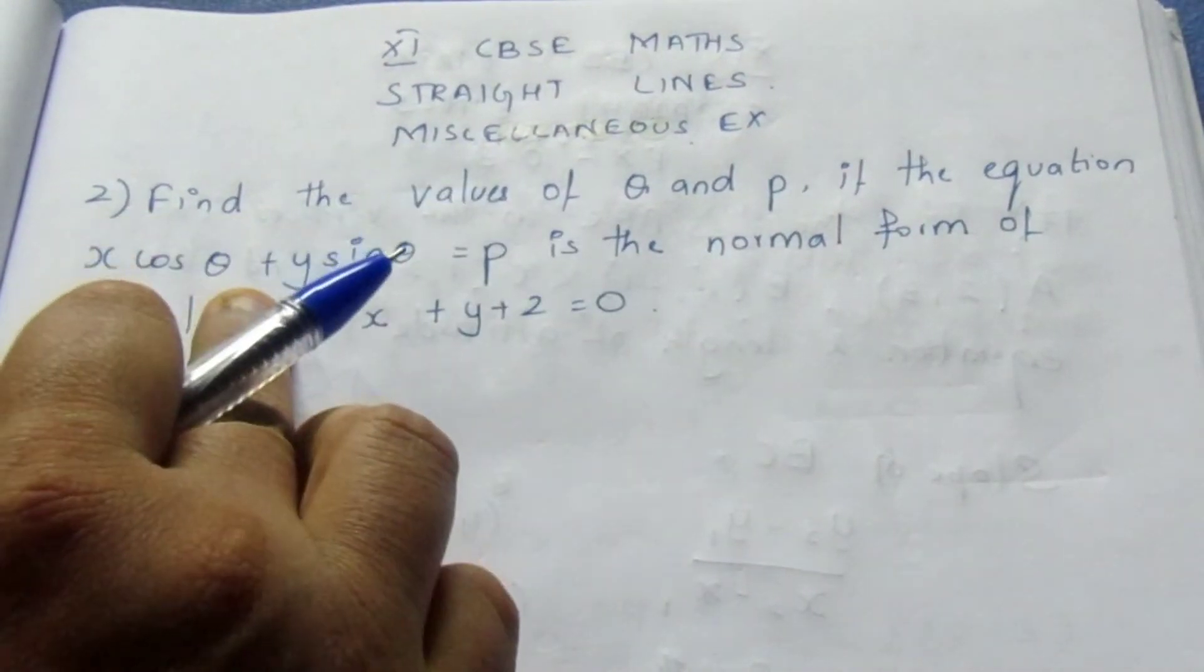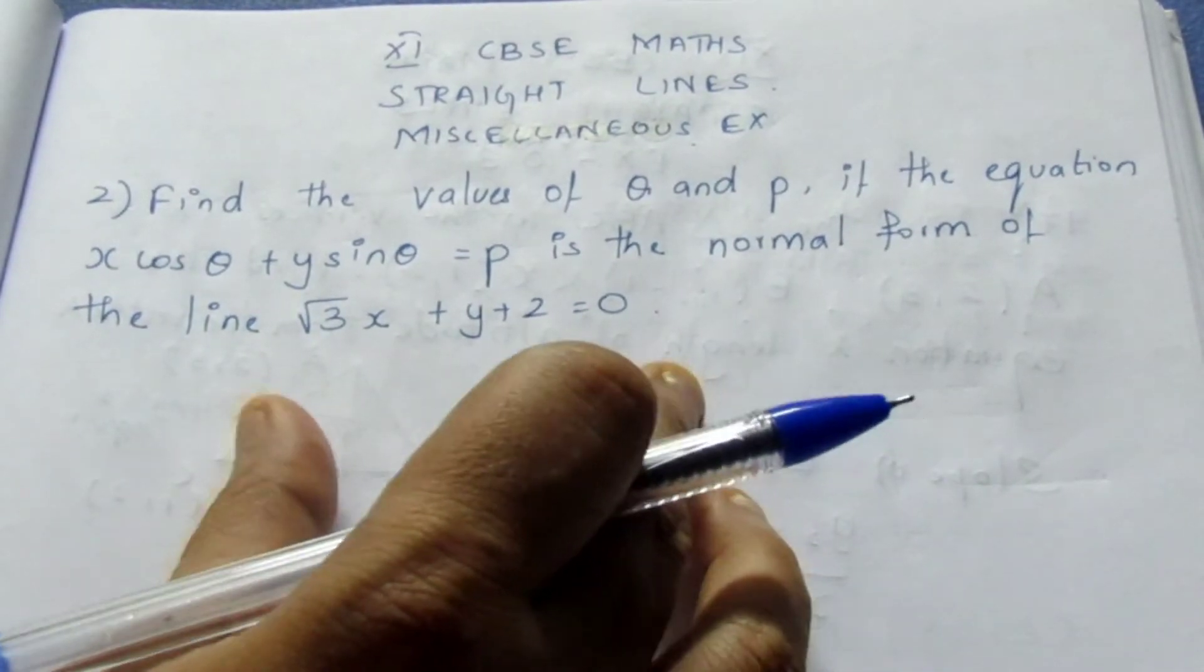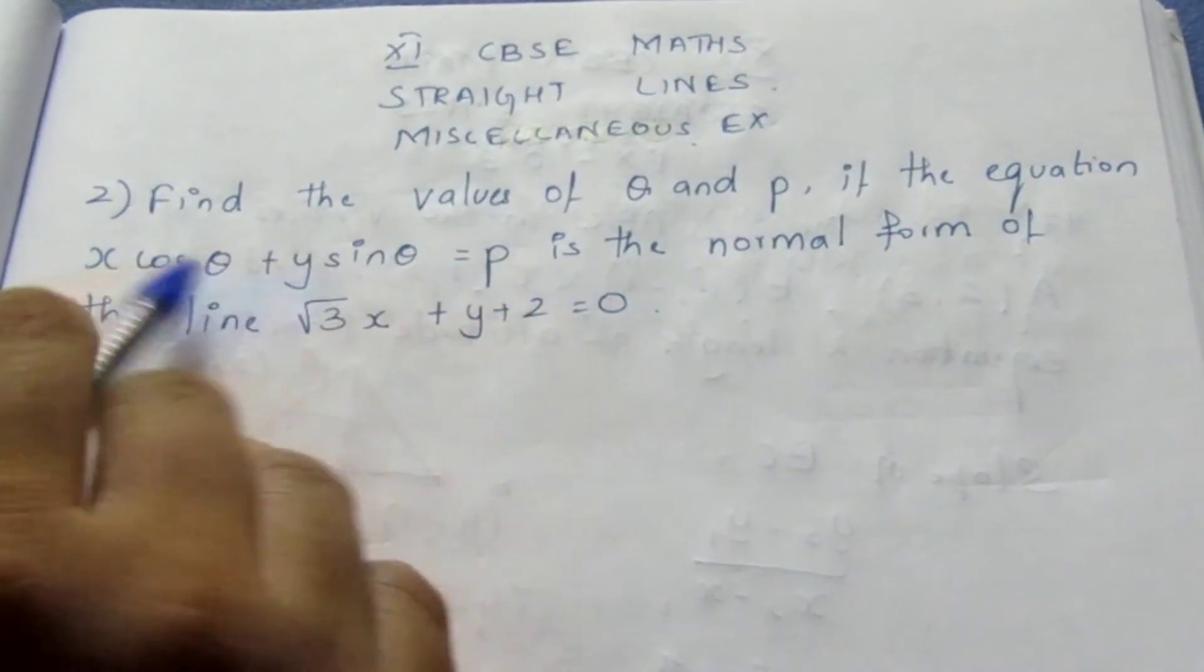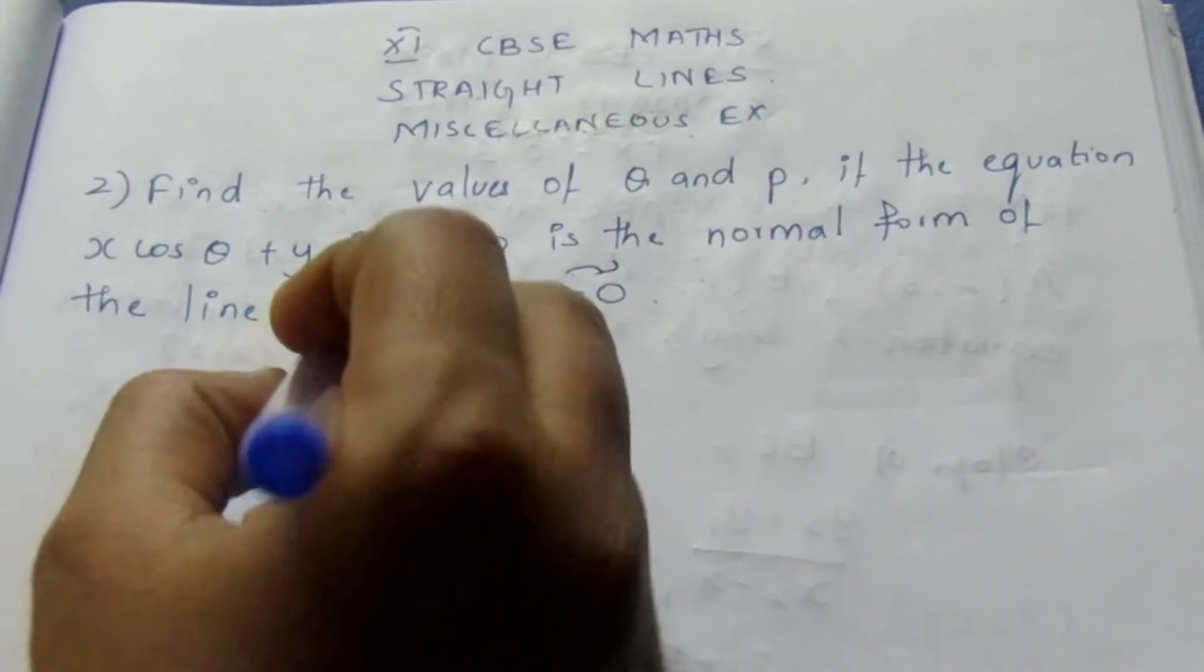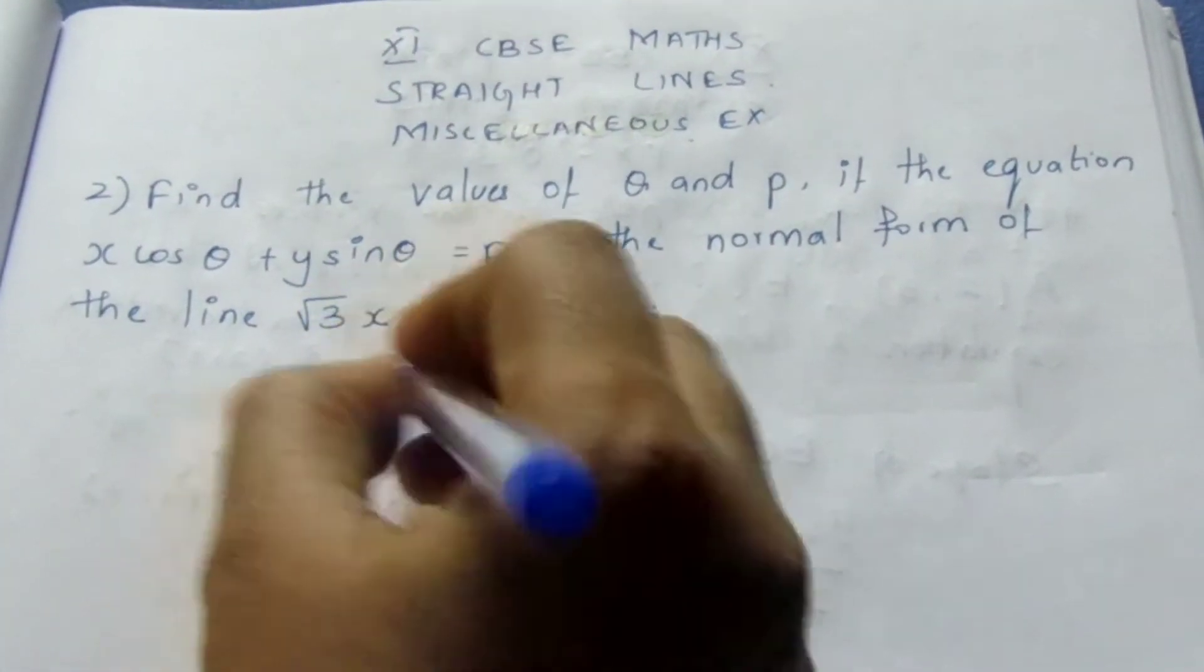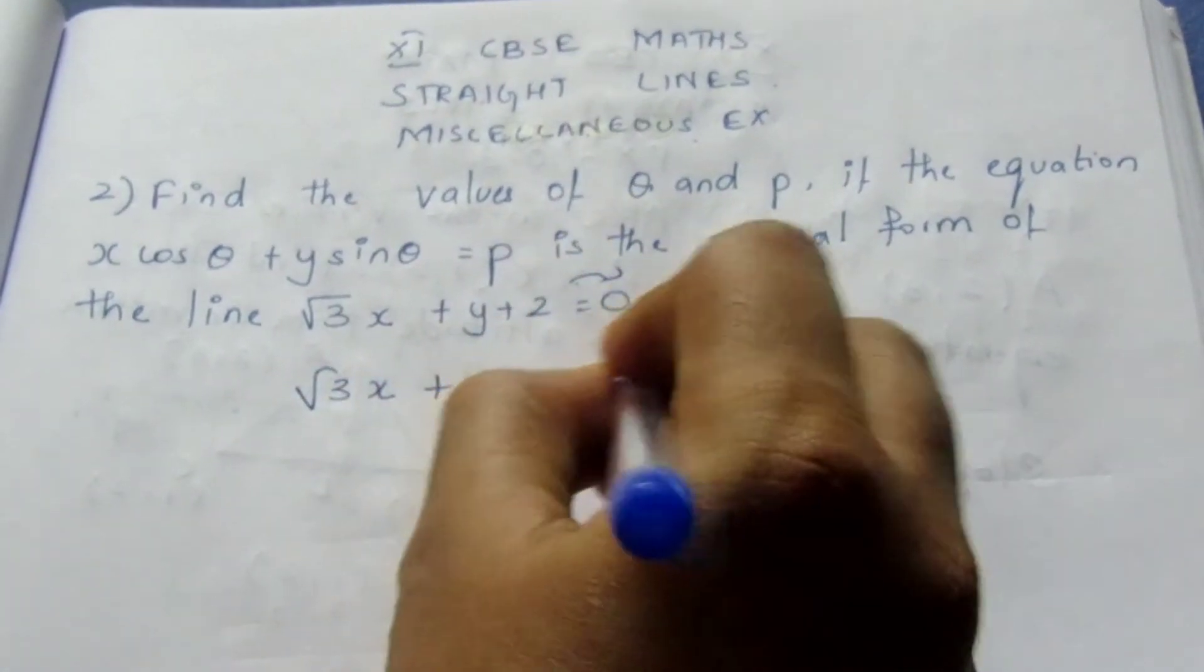This equation normal form is given. We need to turn this equation to find the theta and the p value. Always take the constant term to this side. Root 3x plus y is equal to minus 2.